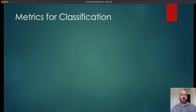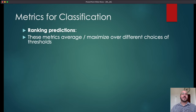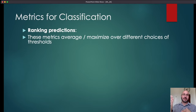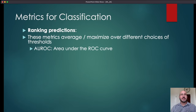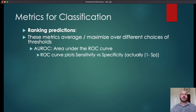Those are metrics for hard predictions. Next, let's talk about metrics for ranking predictions. These metrics typically work by averaging or maximizing over different choices of thresholds. A ranking prediction can be converted into a hard prediction by choosing a threshold. Probably the most common metric for ranking predictions is the AUROC — area under the ROC curve — sometimes called the AUC or the C statistic. The ROC curve plots sensitivity versus one minus specificity, showing the trade-off between the two.